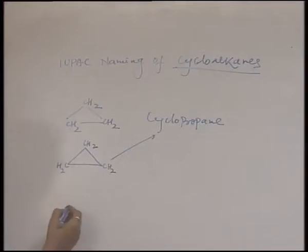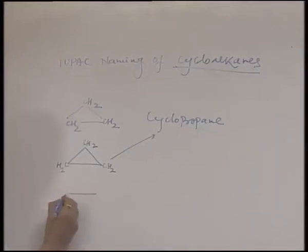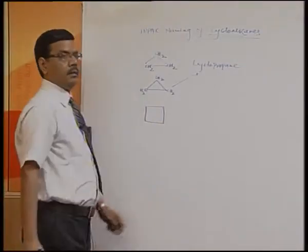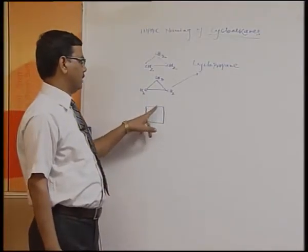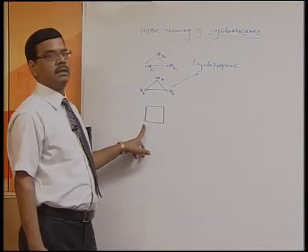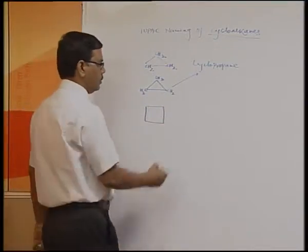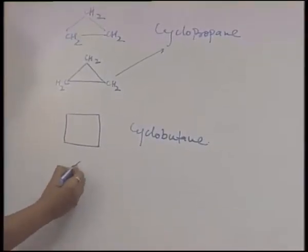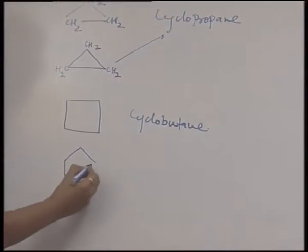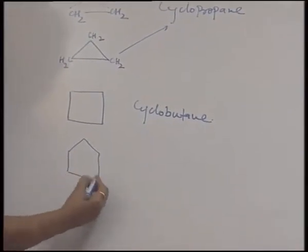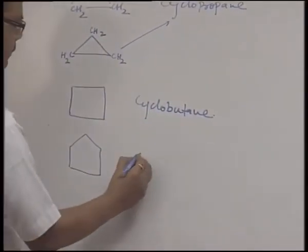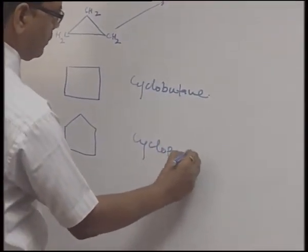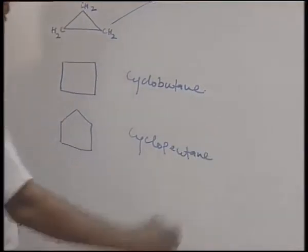In the same way, you can write the IUPAC naming of other cycloalkanes. As it contains 4 carbon atoms — 1, 2, 3, 4 — its name will be cyclobutane. In the same way we can write the IUPAC name of a 5-carbon cyclic compound, which will be cyclopentane.